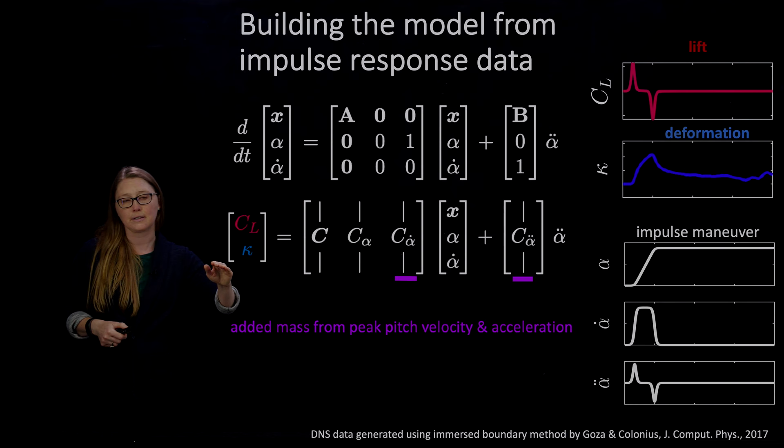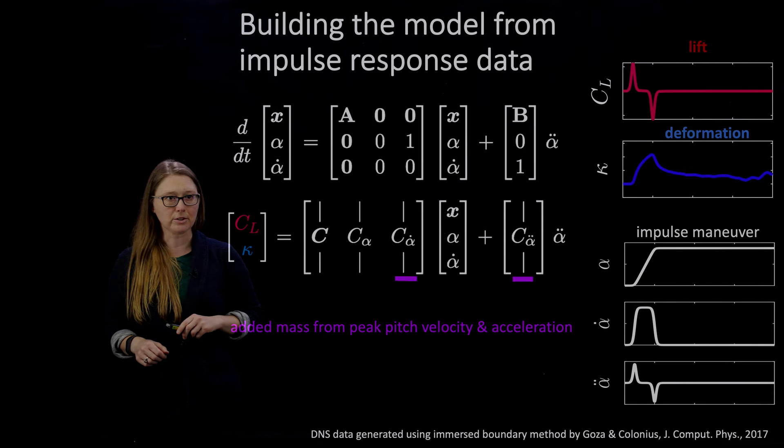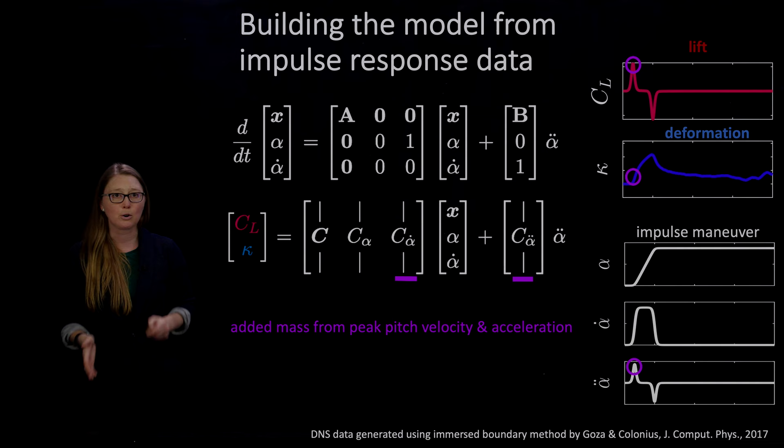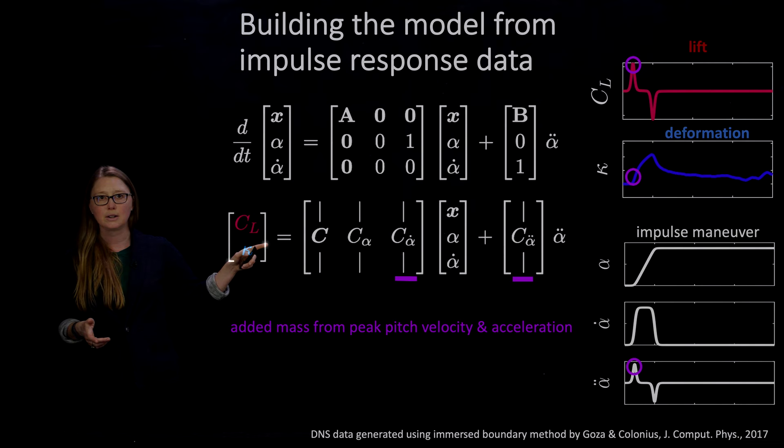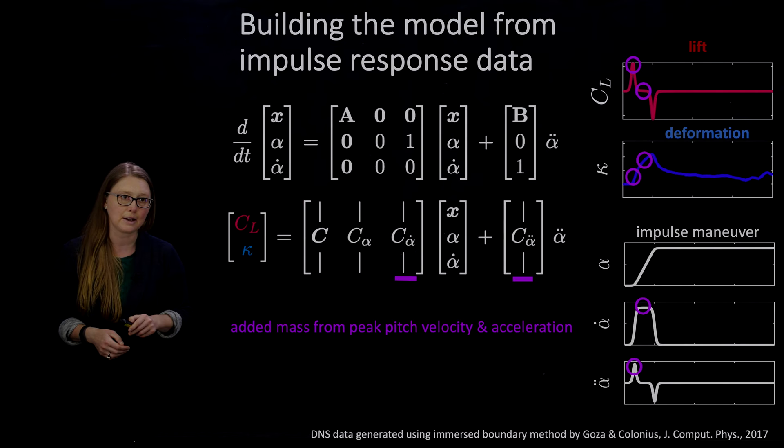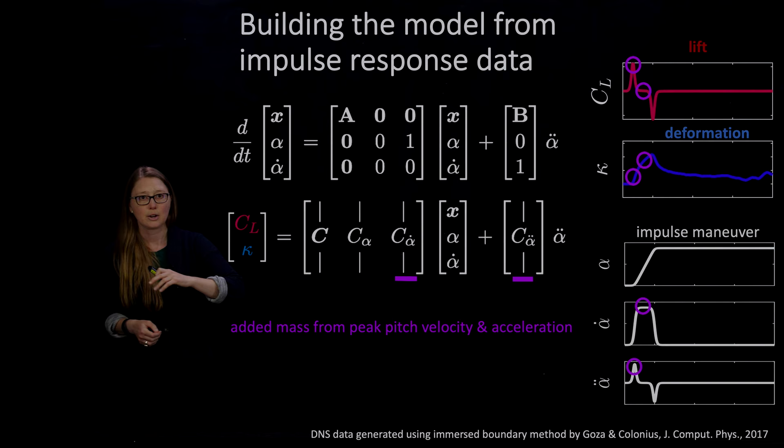That peak in angular acceleration, you see circled in purple, that's the point of maximum acceleration. So we want to get our coefficient associated with acceleration from there. We're going to grab the data from those two points, that coefficient of lift and curvature, and that's how we're going to get that coefficient. We can do the same thing with angular velocity. Take the peak angular velocity, and at the time series, the point where we're there, we're going to grab those points, and those are going to be turned into our angular velocity coefficient. So those are our two added mass coefficients, and we pull them from the times of maximum acceleration and maximum velocity.